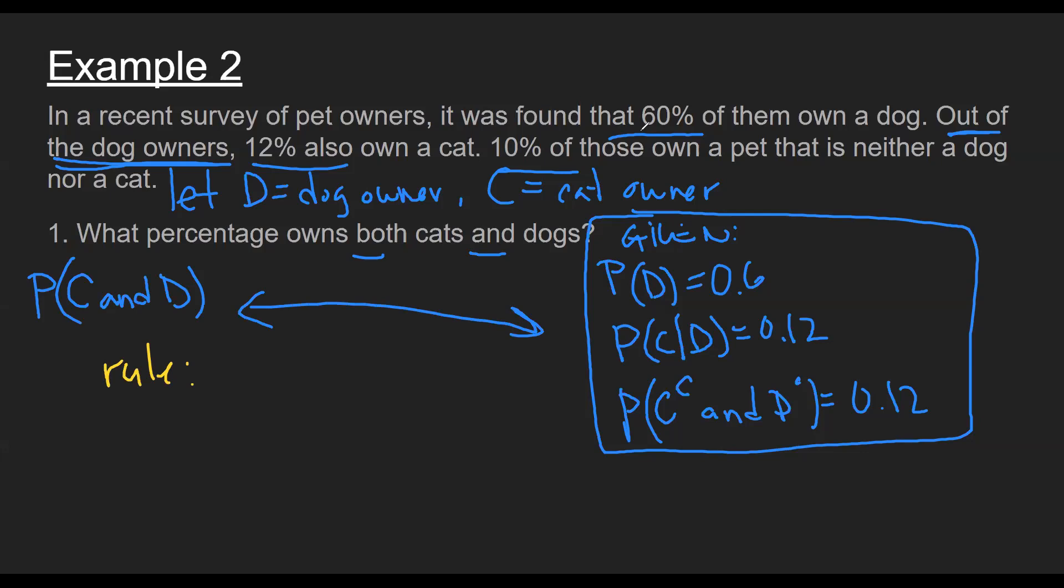So the rule I'm going to use is the conditional rule that says probability of C given D is the intersection, which is what we're trying to find, divided by the condition. And once that rule is in place, I can see, do I have all the numbers? In this case, I do. And now I can just substitute.